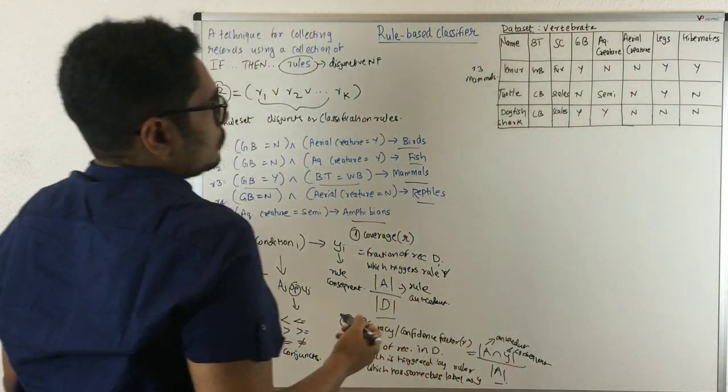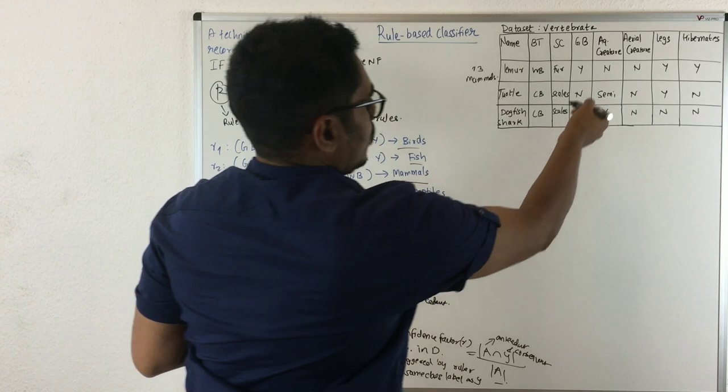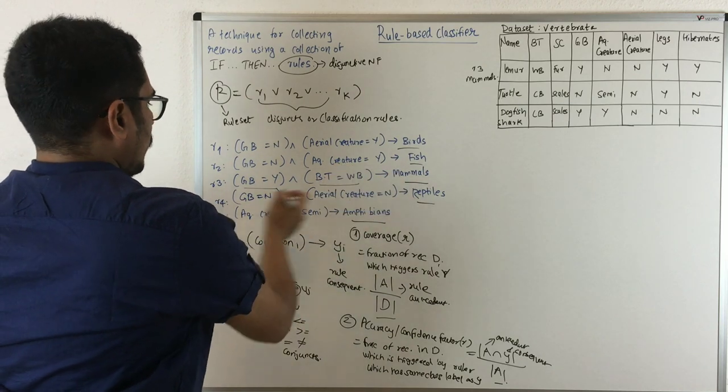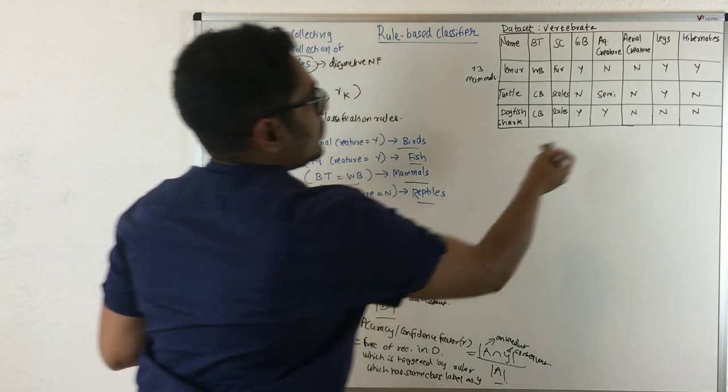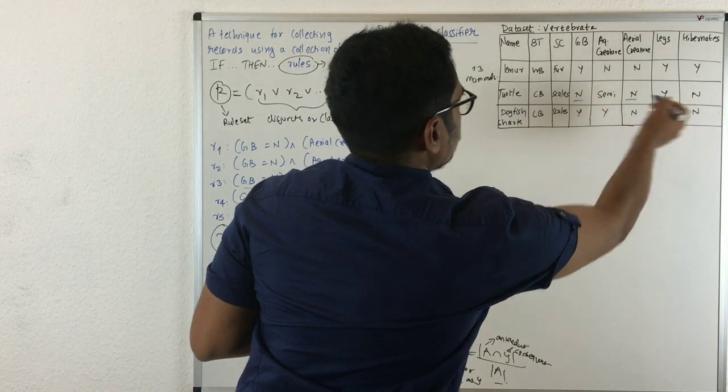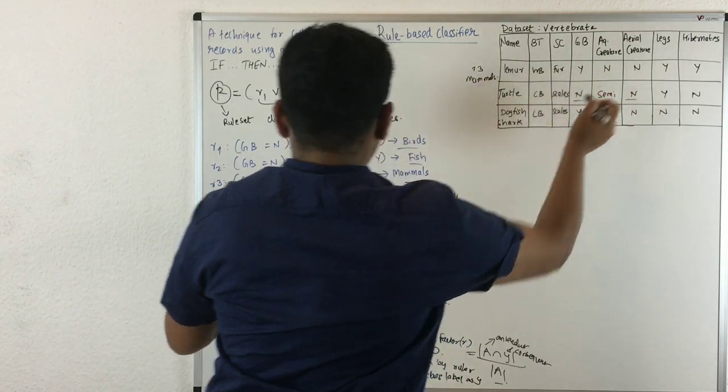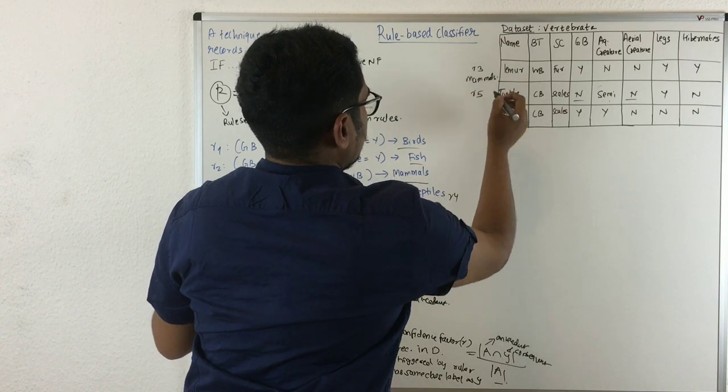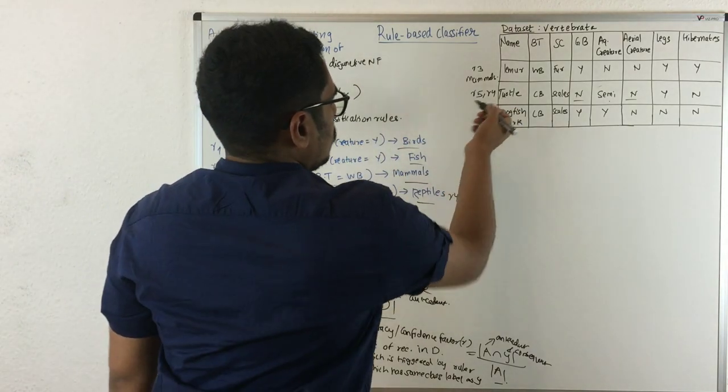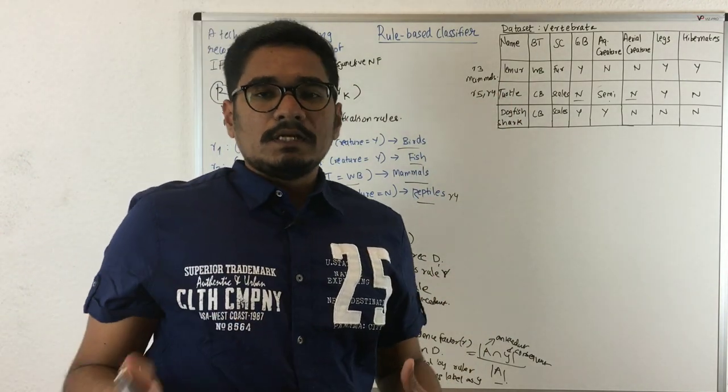Then you have the second record - turtle with body temperature cold-blooded. Nowhere we see cold-blooded, but we have aquatic creature semi. Aquatic creature with gives birth no and aerial creature no - that's rule four. But for aquatic creature semi, it also satisfies rule five. So it has both rule five and rule four - it can belong to either mammals or reptiles. This is one problem with rule-based classifiers: for a particular record, two rules can be triggered.